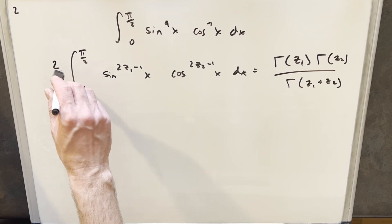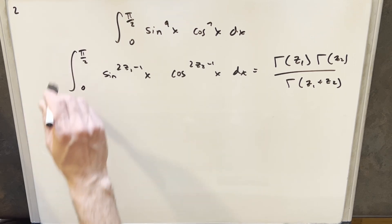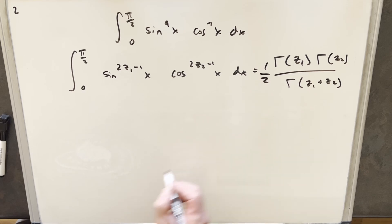One thing I want to do here to make this a little more easy to use for our situation is let's just take this 2 and divide both sides, and we'll have a half over here.